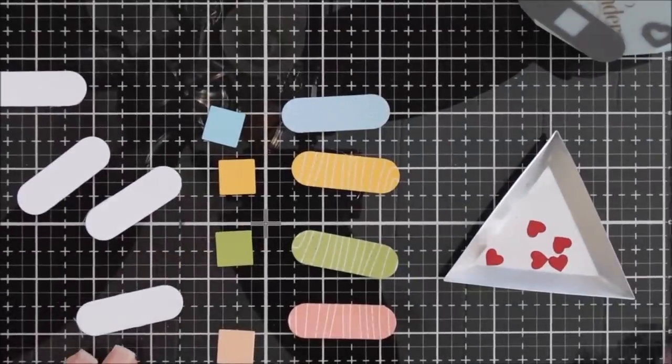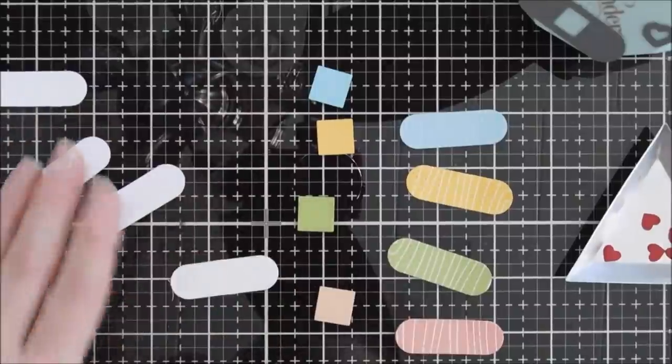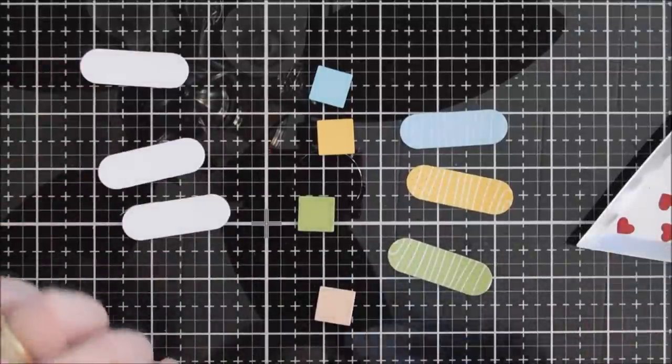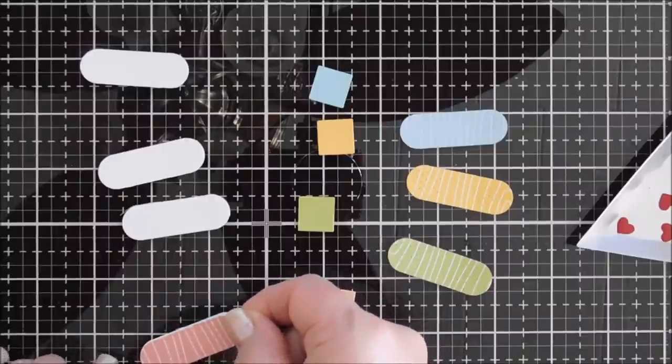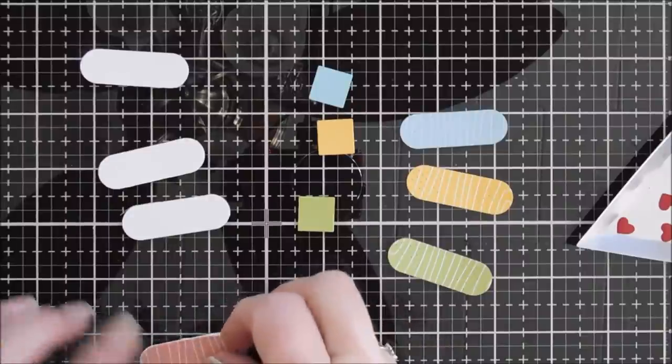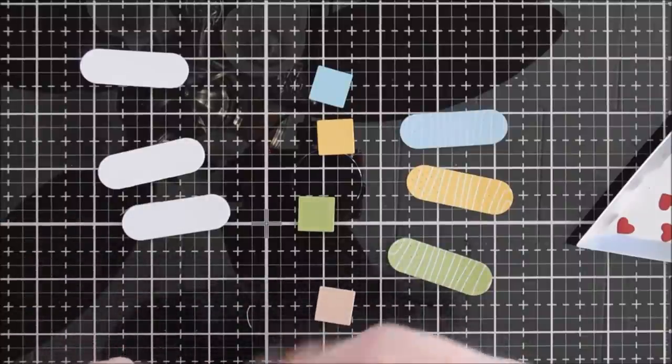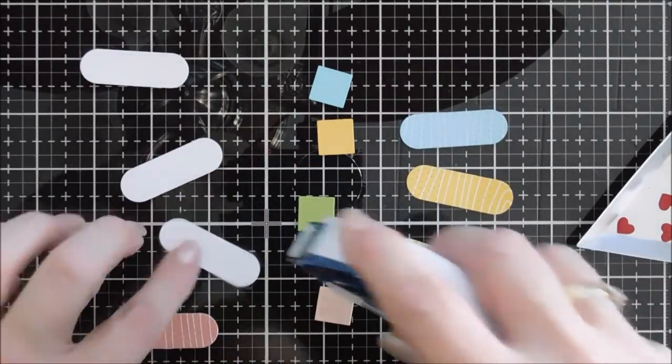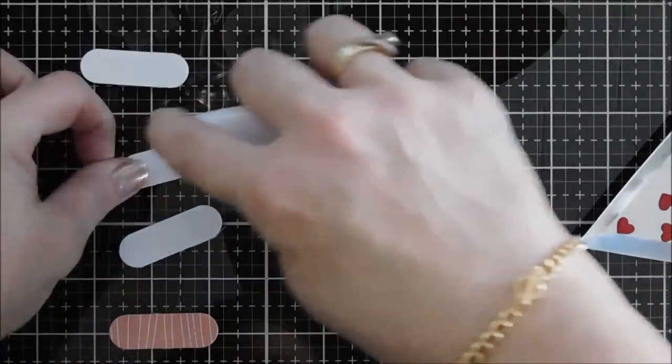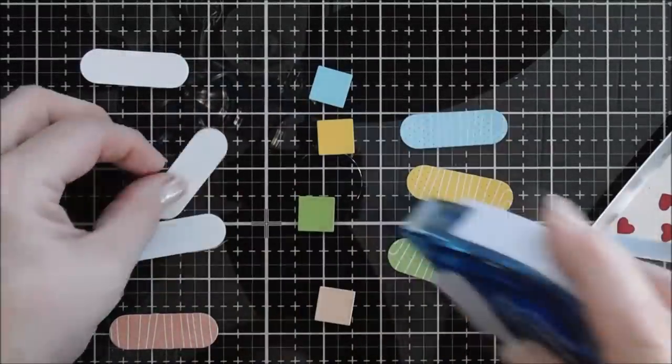Once those were die cut I did take the band-aid die and die cut out white cardstock with it. I wanted to pop up my band-aids but give them a little bit of stability. I thought we would layer our pattern paper over the white cardstock. You can completely skip this step. I think the pattern paper if you put a large amount of adhesive tape behind it you can get away with it.